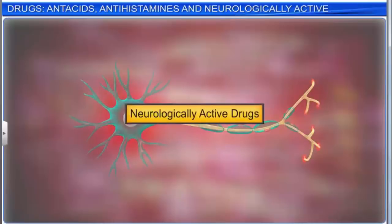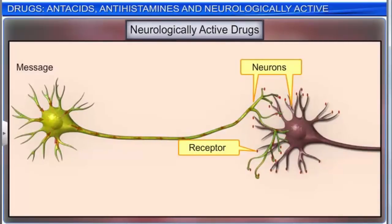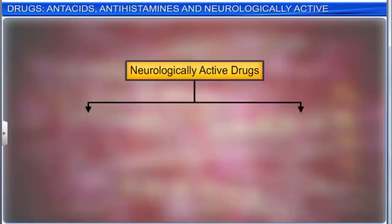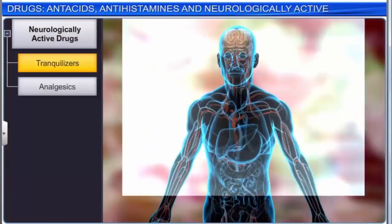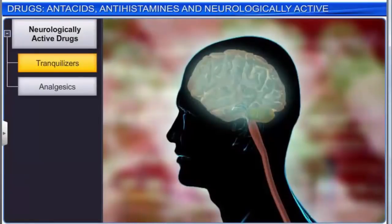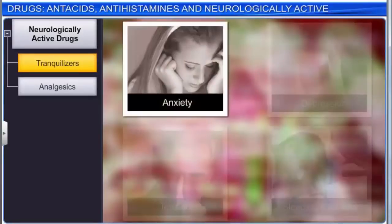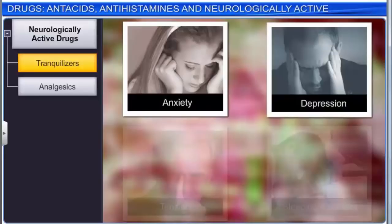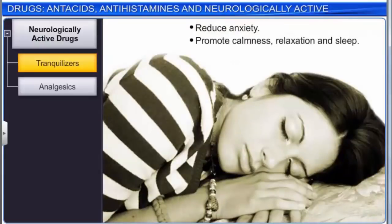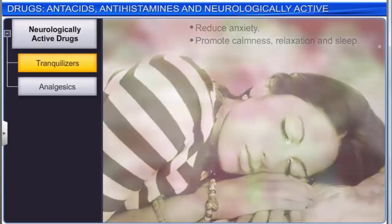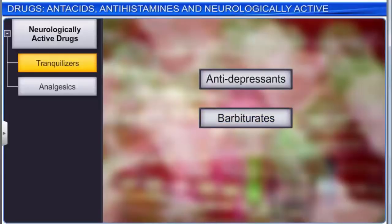The next class of drugs is neurologically active drugs, which affect the message transfer mechanism between the nerves and the receptors. These are commonly classified as tranquilizers and analgesics. A tranquilizer is a drug that acts on the central nervous system, prescribed by doctors to treat anxiety, depression, tension, and sleeping disorders. These drugs reduce anxiety and promote calmness, relaxation, and sleep. There are several types of tranquilizers, like antidepressants and barbiturates, and they function by different mechanisms.